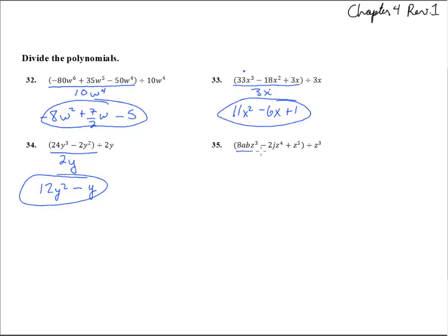And number 35, if we divide everything by z cubed, z cubed, z cubed - if you think about it as 3 separate fractions, that might make it easier.